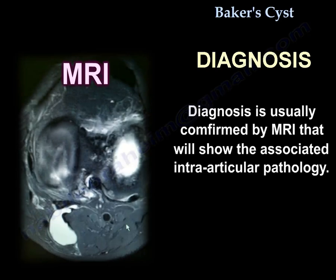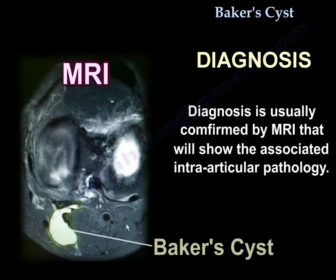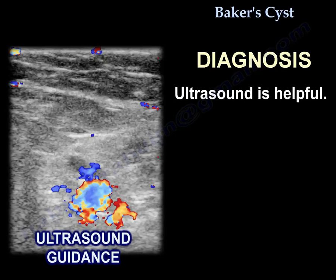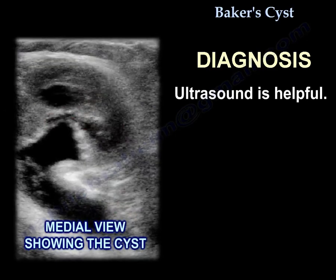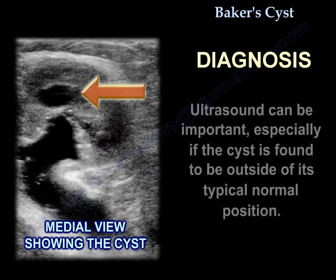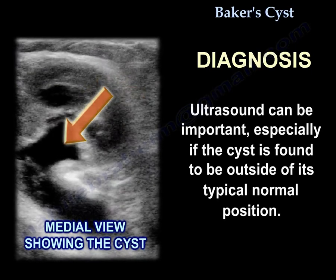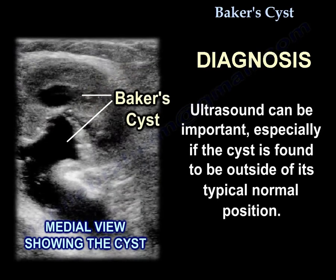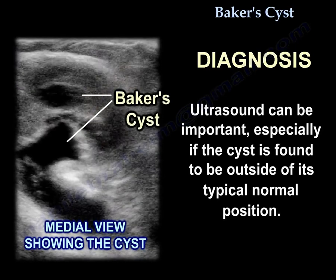The diagnosis is usually confirmed by an MRI that will show the associated intra-articular pathology. Ultrasound is also helpful; the cyst will be located medial to the blood vessels. Ultrasound can be especially important if the cyst is found to be outside of its typical normal position.